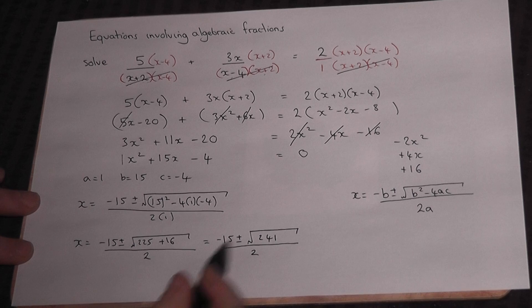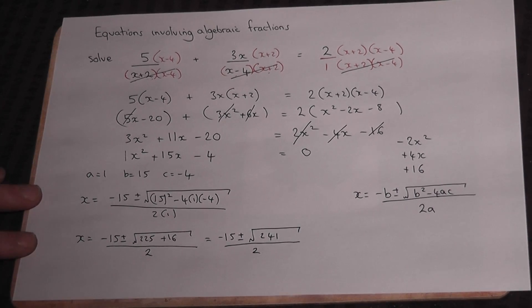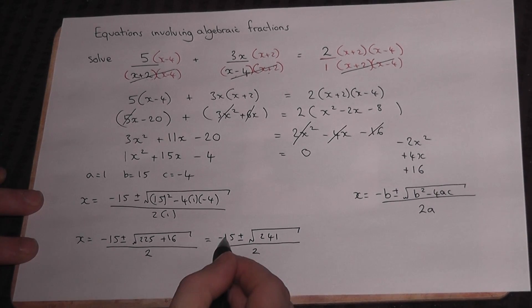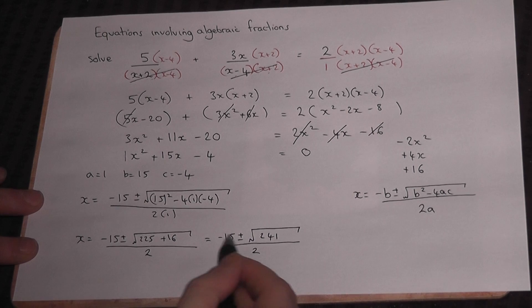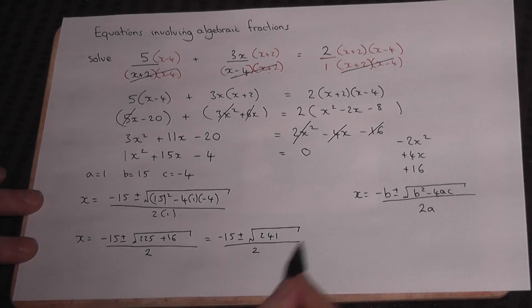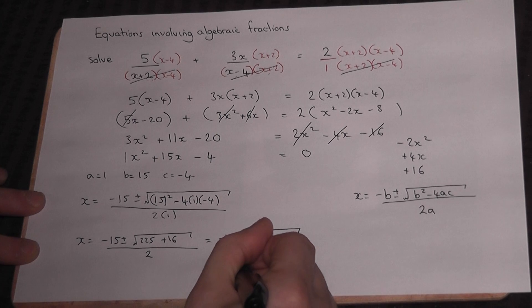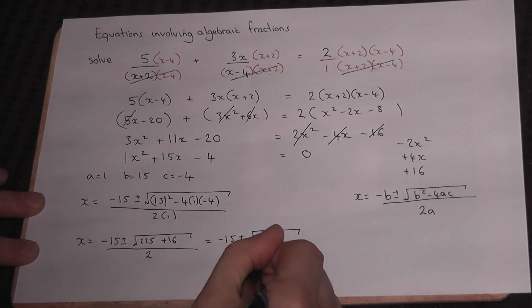These are two solutions left in the form of a surd: either minus 15 plus or minus 15 minus this square root all over 2, and we'll leave it as a surd.